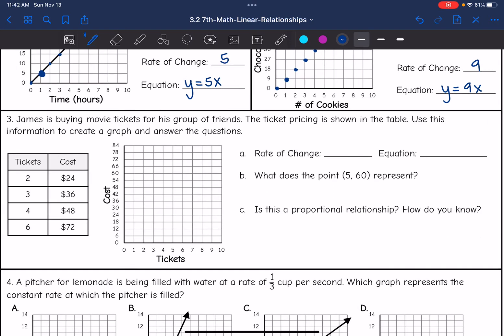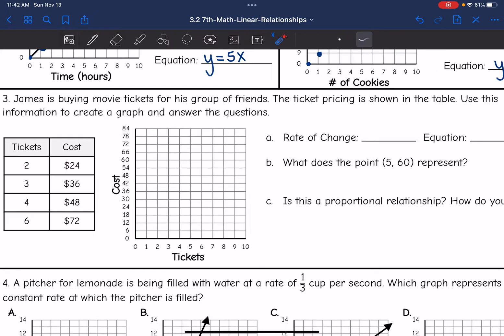Let's look at number three. It says James is buying movie tickets for his group of friends. The ticket pricing is shown in the table. Use this information to create a graph and answer the questions. So I have a few ordered pairs right here in the table. Two tickets cost $24, three $36, and so on. So I'm going to go ahead and plot those on the graph.